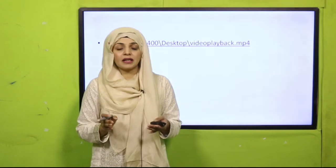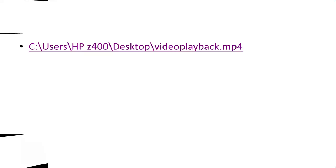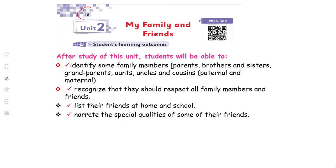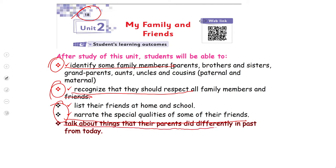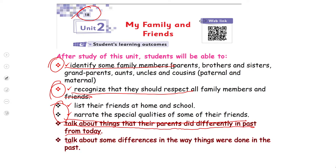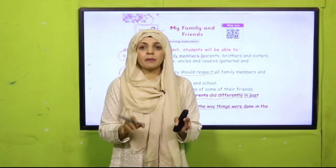Today we will learn about past life and present life — how our lives are different from our grandparents' and parents' lives. Let's have a look at the SLOs. We have identified family members, recognized how we should respect family members and friends, and narrated the special qualities of some friends. Today we will talk about the things that parents did differently in the past and discuss some differences in the ways things were done.